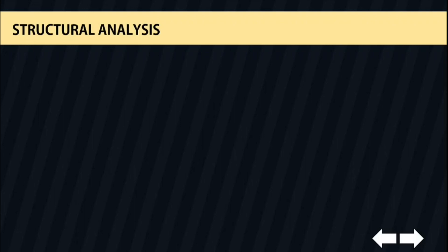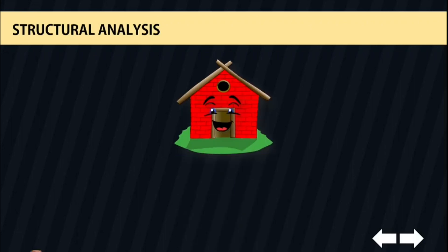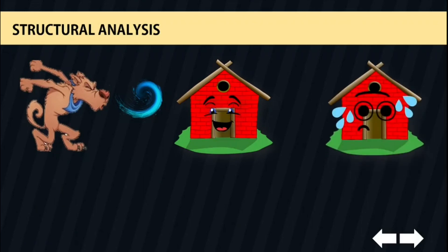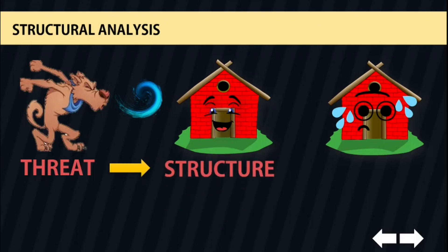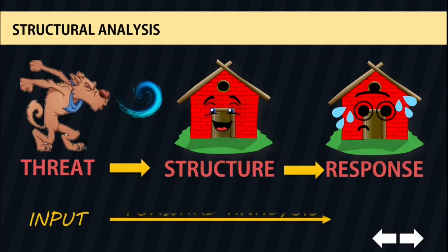To explain further, consider the story of the three little pigs. The lesson of that story is relevant to structural engineering. While the wolf was blowing the house down, the house reacted to the impact given by the wolf. In structural analysis, the wolf is the threat, and the house is the structure. After blowing the house down, the house reacted — and that reaction is the response of the structure. In a forward analysis, the threat is our input and the response is our output.